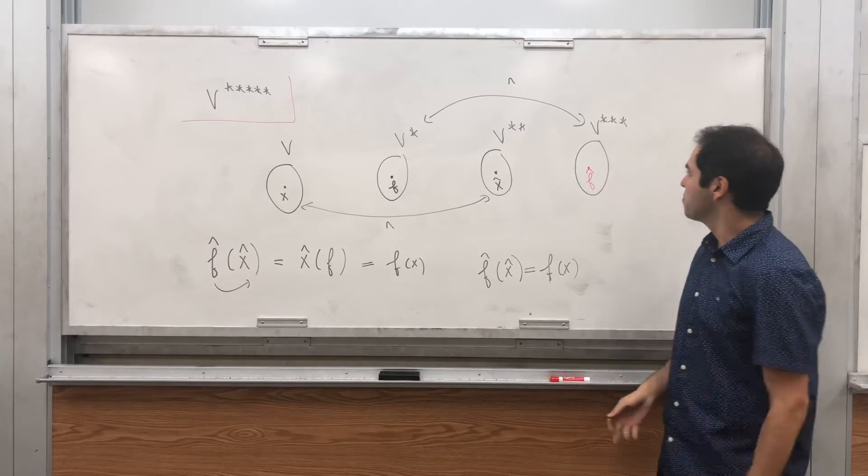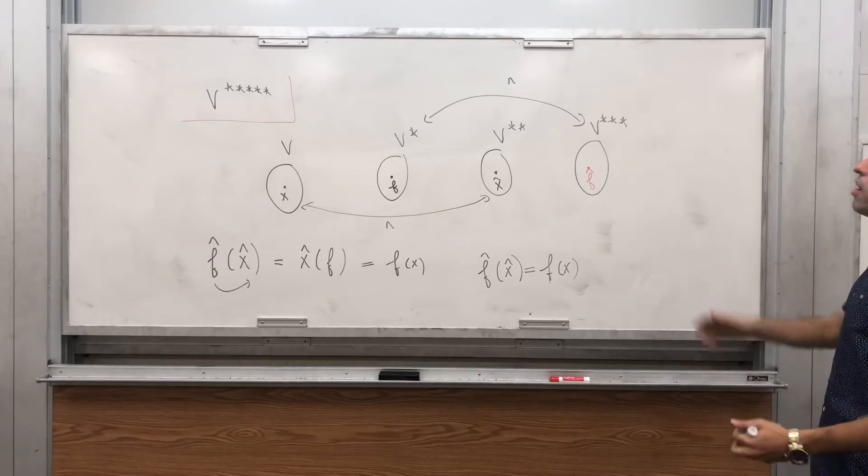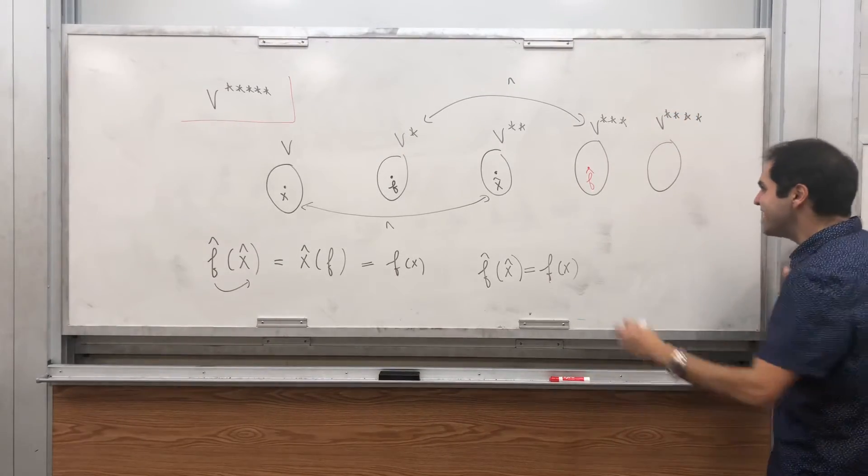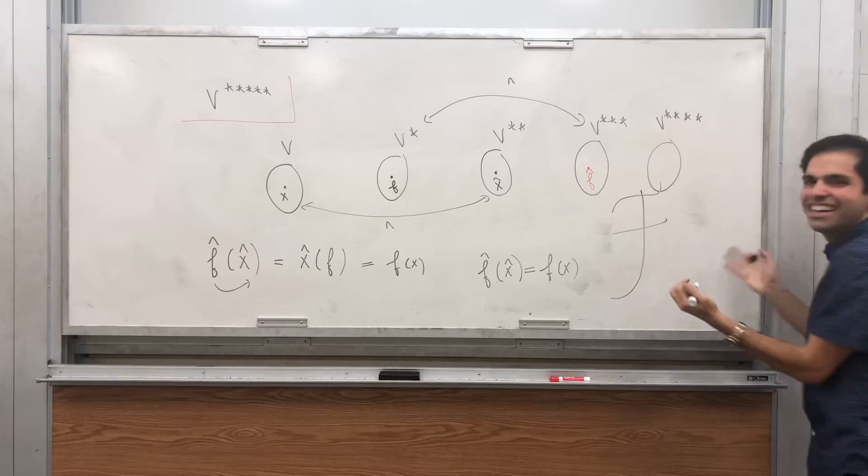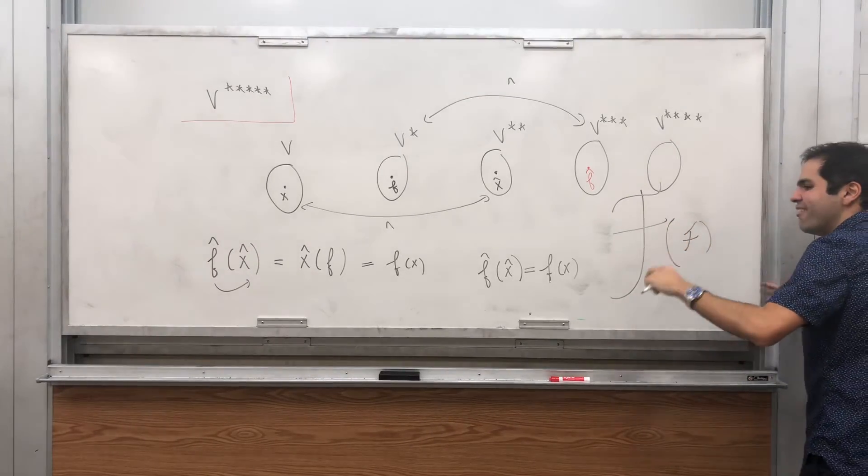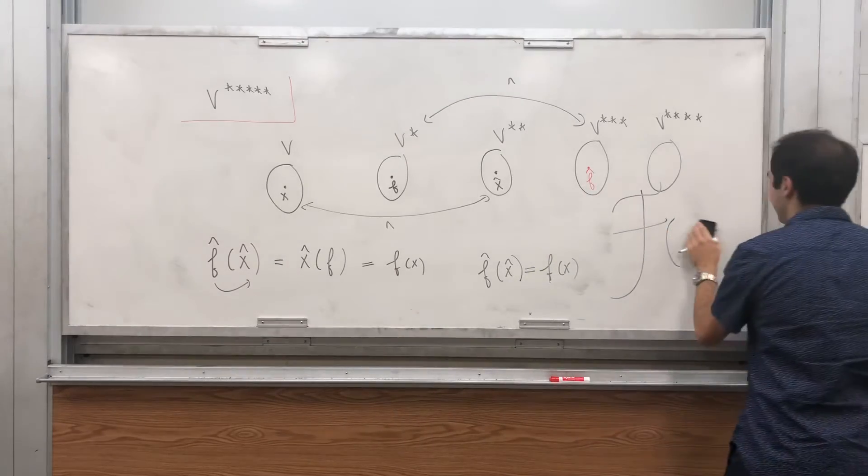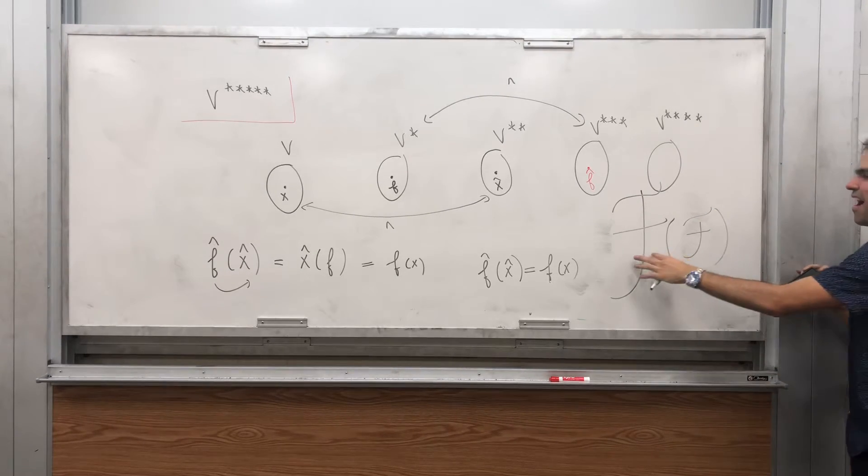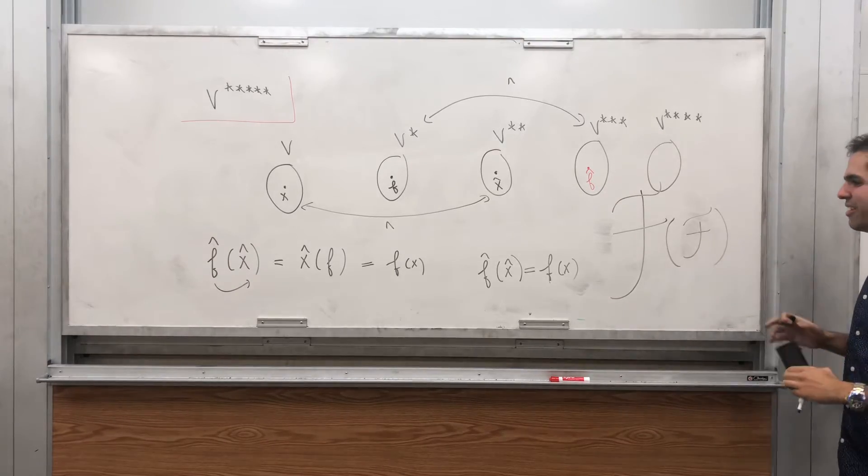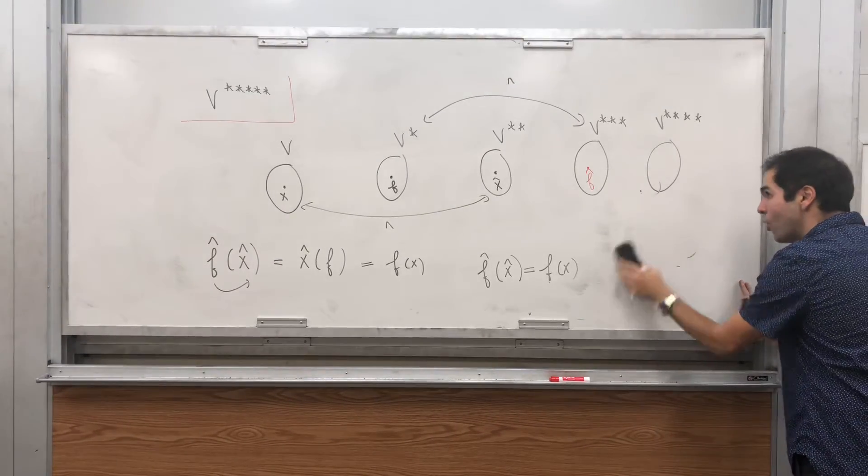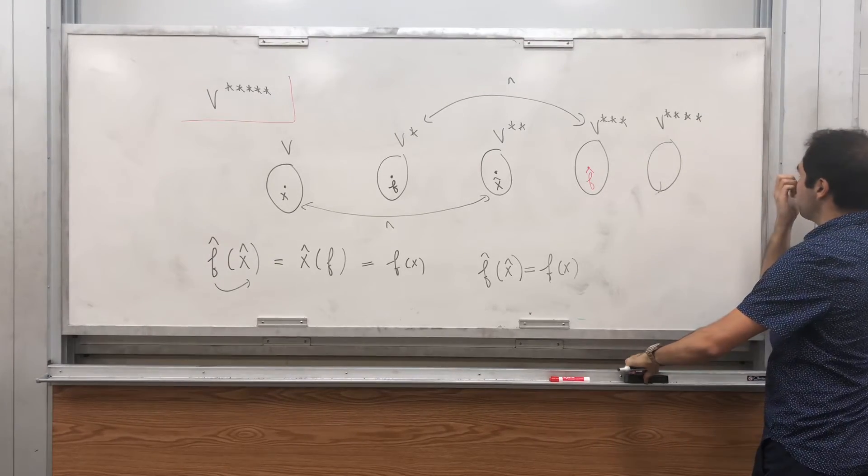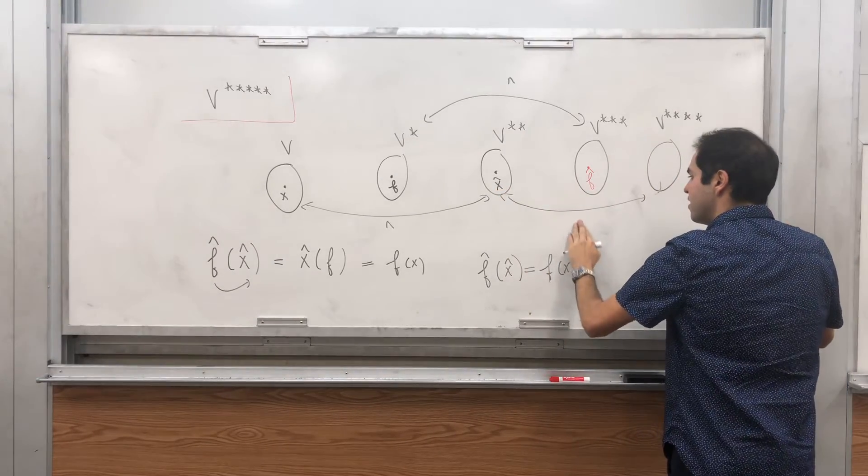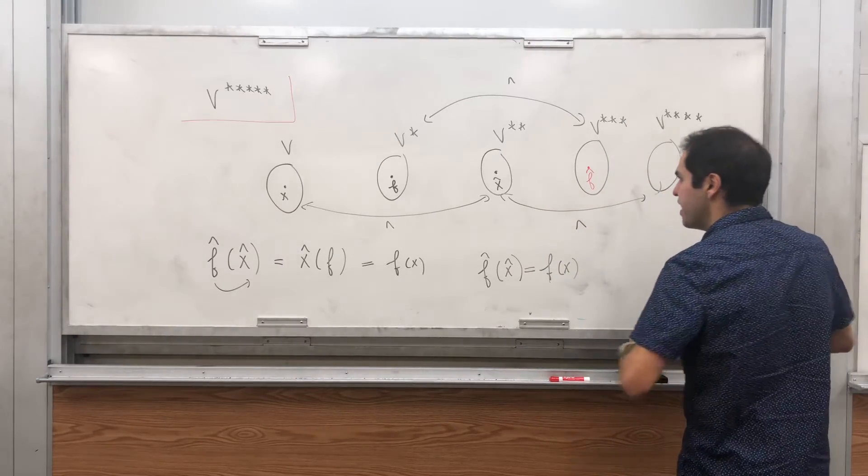Now the question is, what about V quadruple star? Technically it takes gigantic functionals as input, takes a functional in V triple star as input. But again, you don't need this because here you have two more stars than here, so you can add an extra hat. You can add an extra hat to this, and so what you would get is X hat hat.